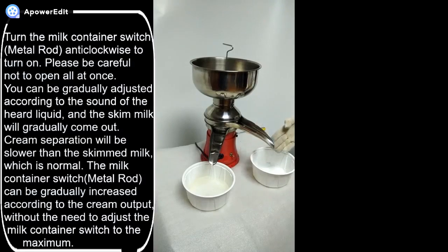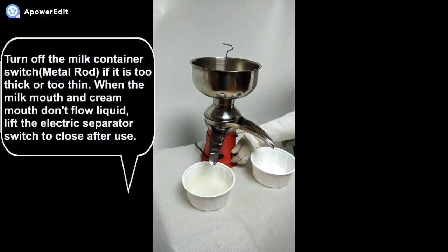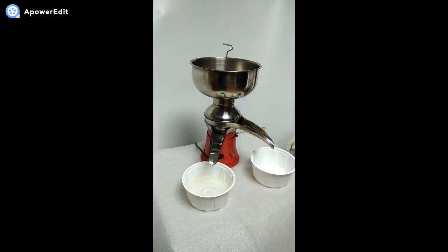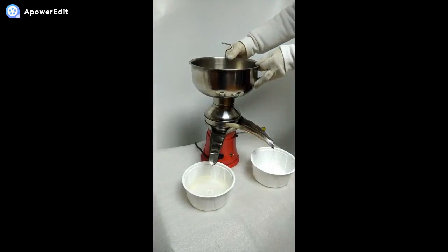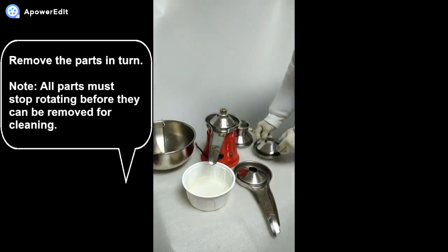Turn off the milk container switch if the cream is too thin. When the milk spout and cream spout don't release liquid, lift the electric separator switch to close. The cream thickness can be adjusted by turning the parts clockwise. If you still can't get cream during use, you will need to tighten the parts.